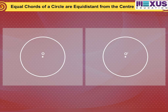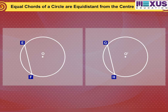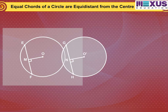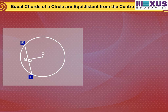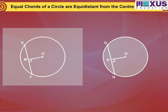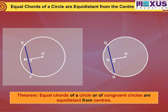If we repeat the activity by drawing congruent circles with centers O and O', and taking equal chords EF and GH one on each, then draw perpendiculars OM and O'N on them. Cut one circular disc and put it on the other so that EF coincides with GH. Then you will find that O coincides with O' and M coincides with N. From this we can verify the following theorem: Equal chords of a circle or of congruent circles are equidistant from the centers.